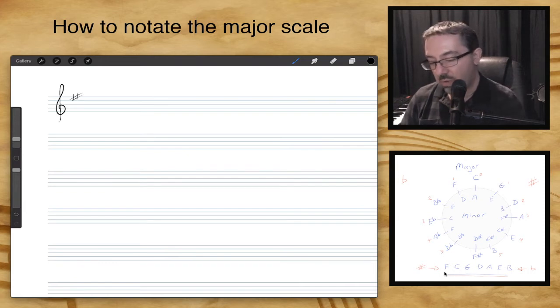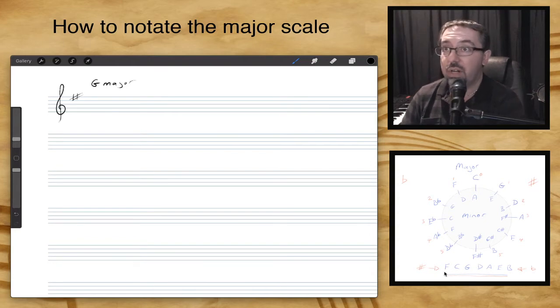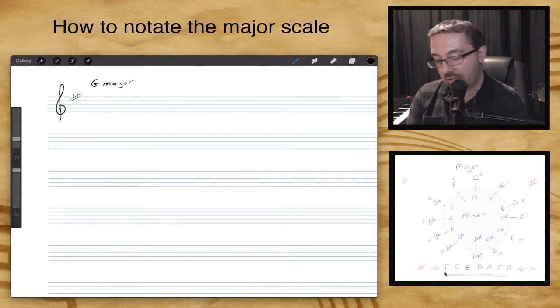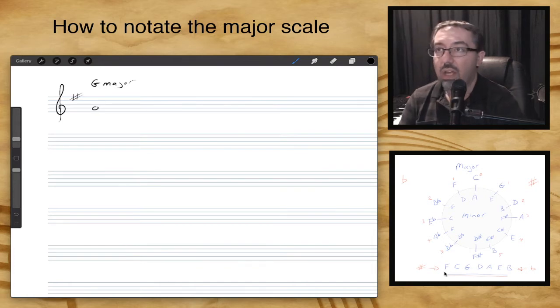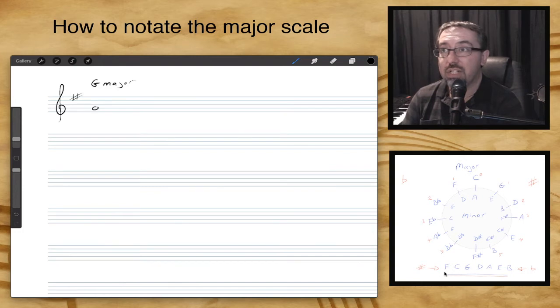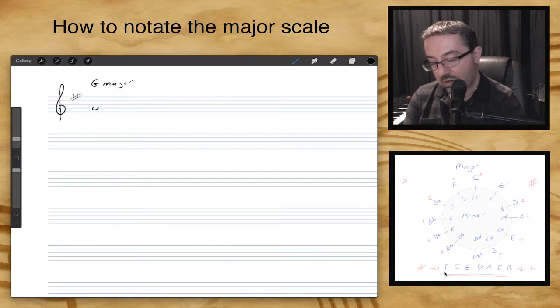So the next thing we're going to draw in is the notes. Now, major scales, and specifically this one being the G major, starts on a G. So whatever scale you're writing, you will always start your scale on the letter of that scale. So let's put our G note in. And it goes on that note. And with our major scales, we're going to write them as 8-note diatonic scales. So we go up our normal musical alphabet to work out the next lot of notes.